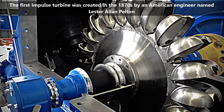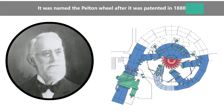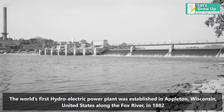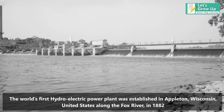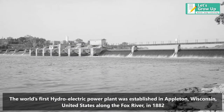The first impulse turbine was created in the 1870s by an American engineer named Lester Allen Pelton. It was named the Pelton wheel after it was patented in 1880.